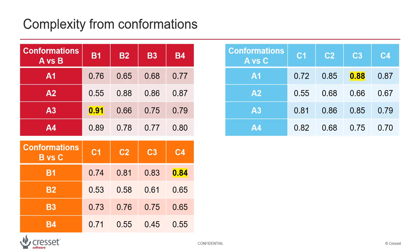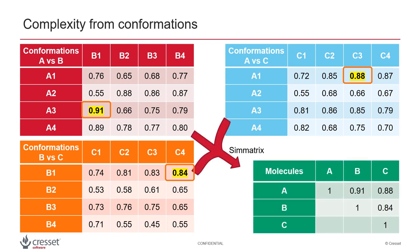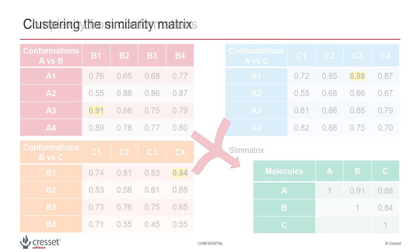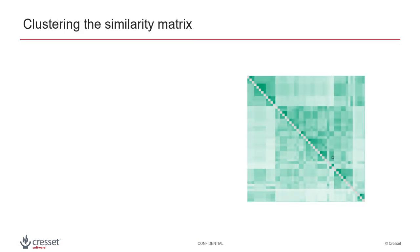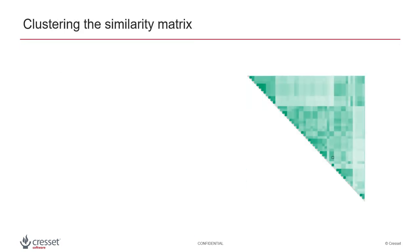From this we take the highest value forward into the final molecule-on-molecule similarity matrix, as demonstrated here. Only the value highlighted in yellow is used in the final matrix. The final similarity matrix is then clustered using an in-house implementation of the K-Medoids algorithm.